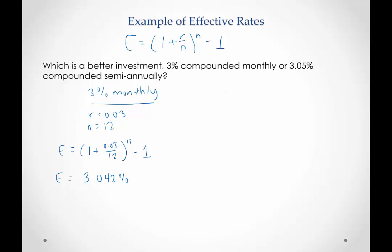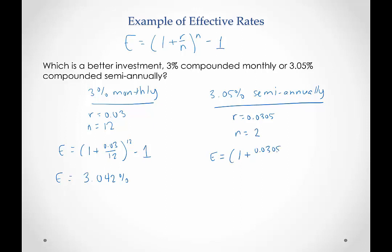Compared to the 3.05% compounded semiannually: R is 0.0305, and semiannually means twice a year, so N is 2. Plugging this in, we get E is equal to 1 plus 0.0305 divided by 2, squared, minus 1. When we do that in the calculator, I end up getting 3.073%. So which one is a better deal? The 3.05% compounded semiannually — that's the better deal, that's the one I would want to go with.